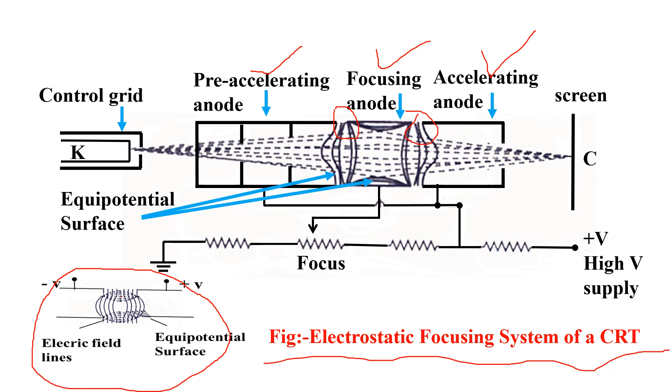These equipotential surfaces bulge at the center of the two anodes, as shown here. This bulging occurs at the center between these two anodes.